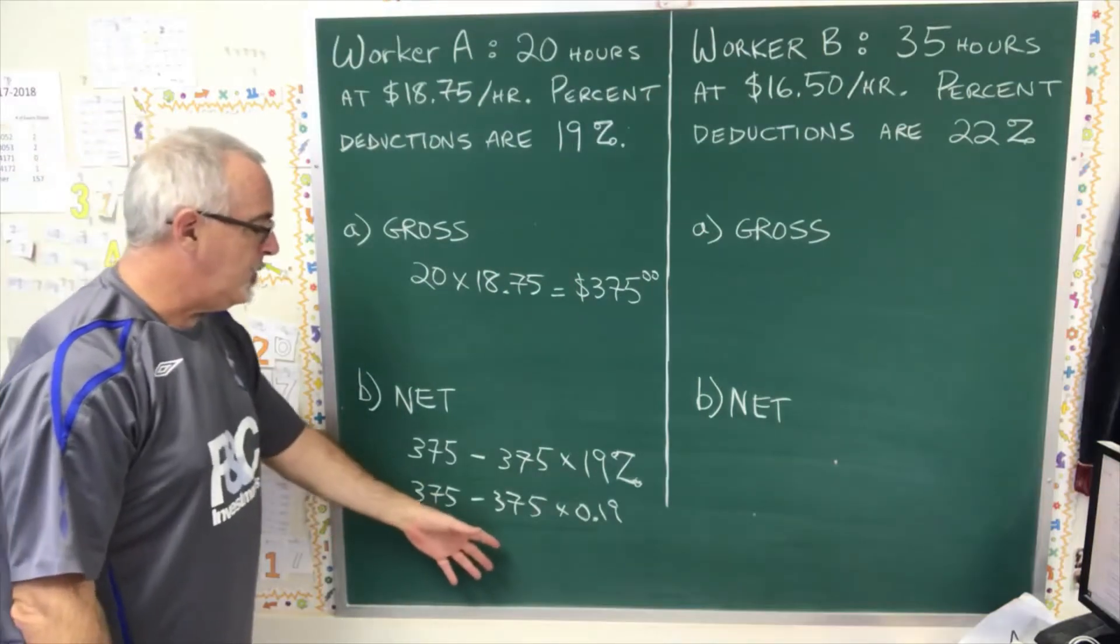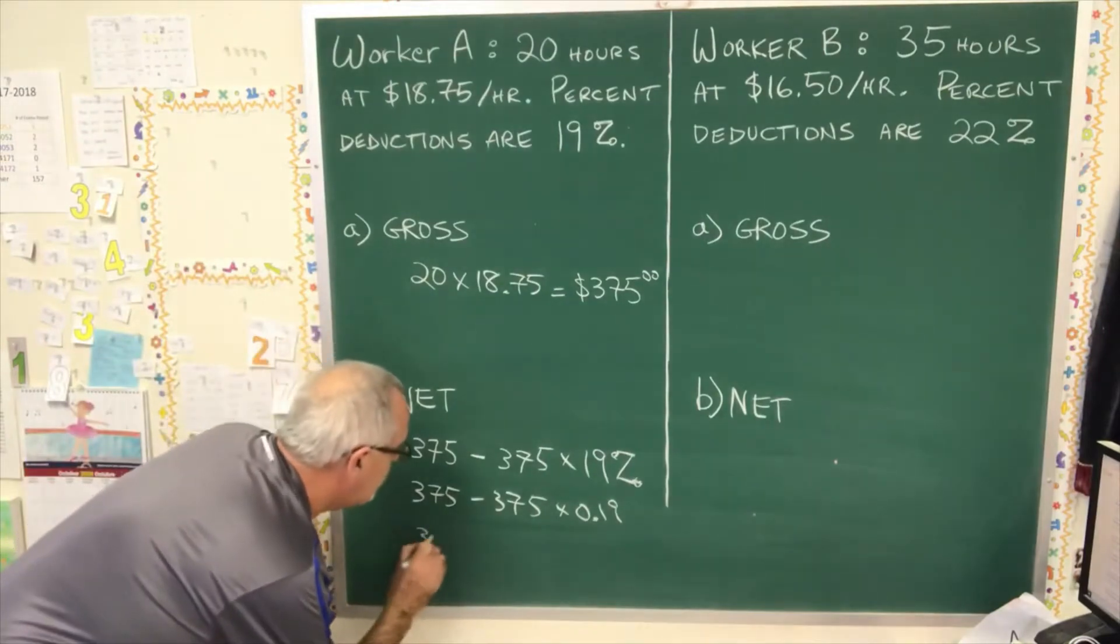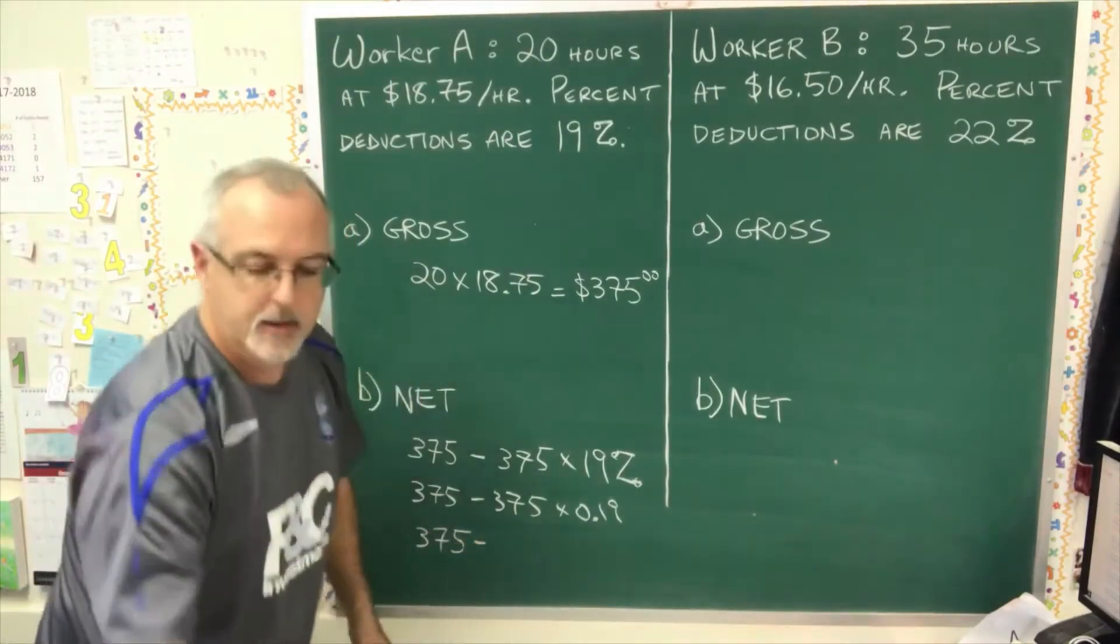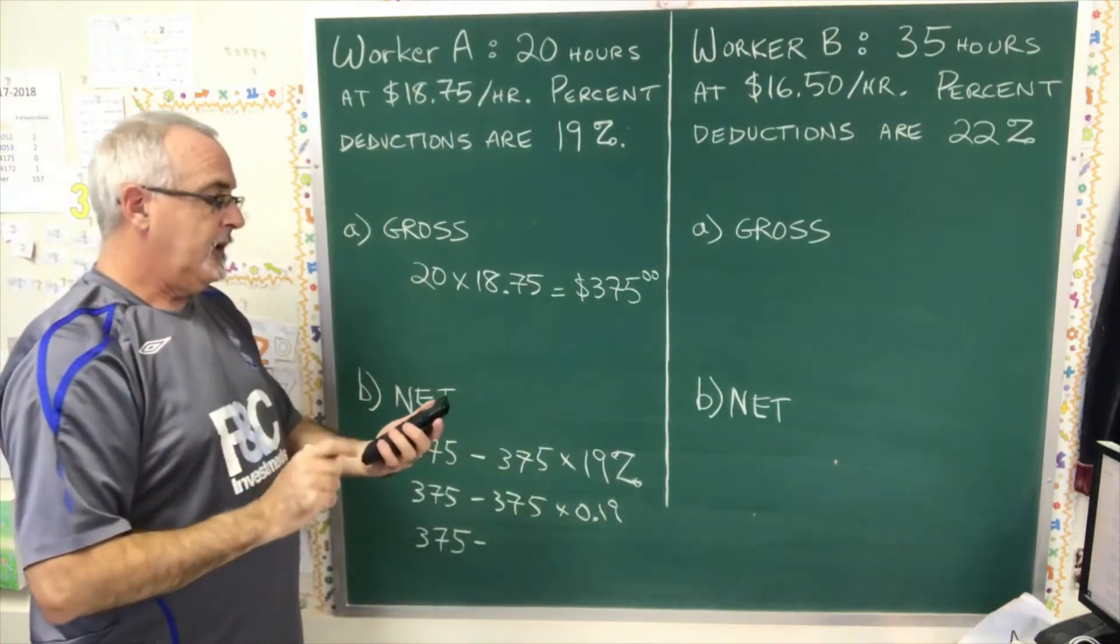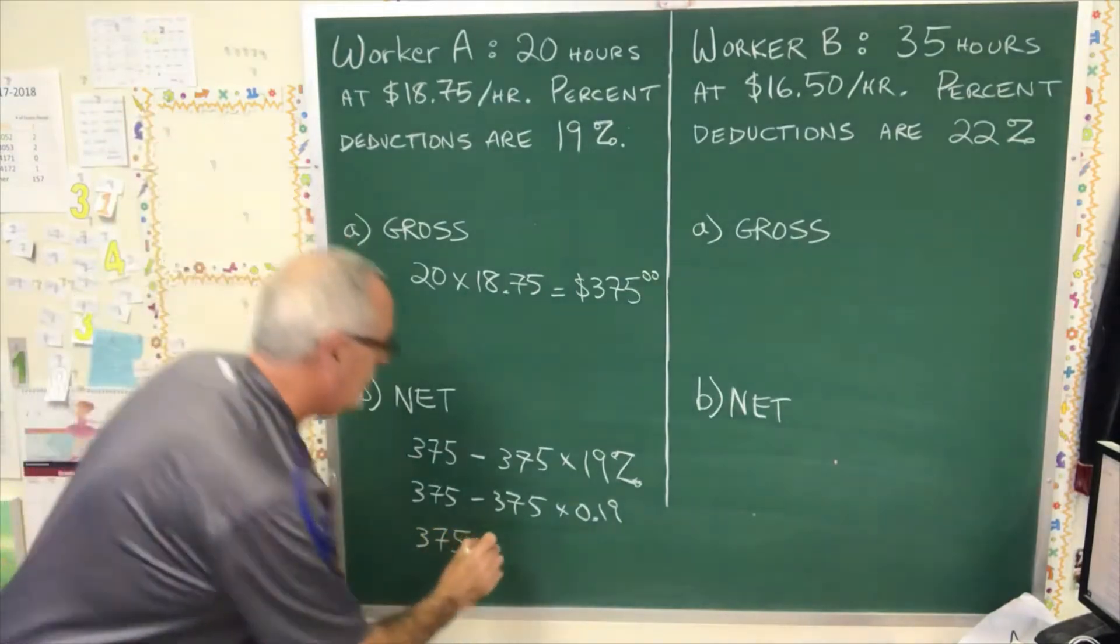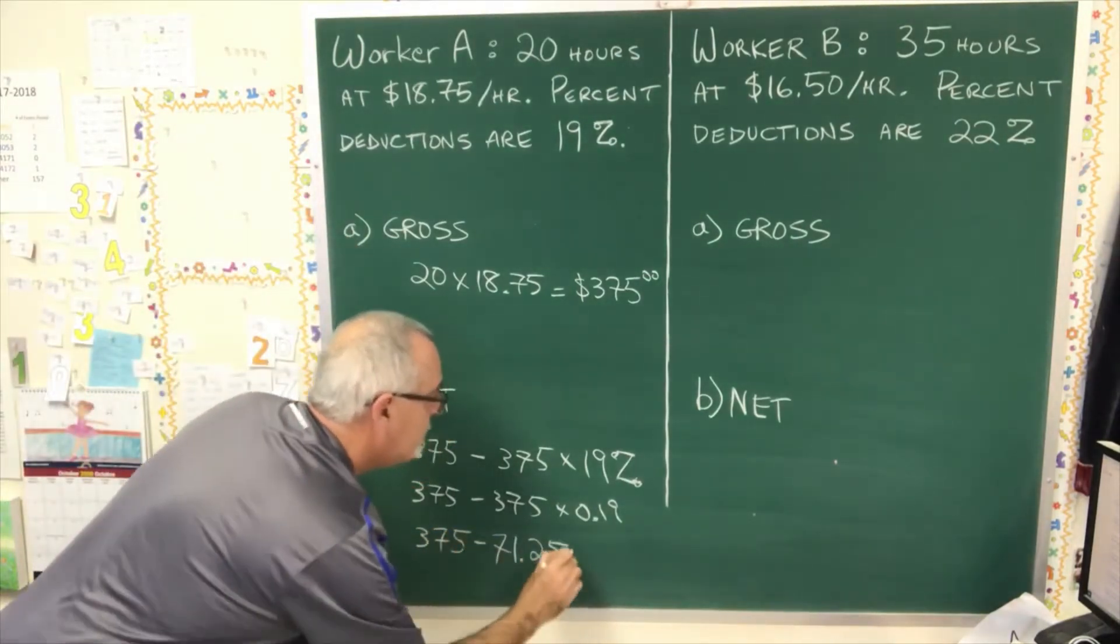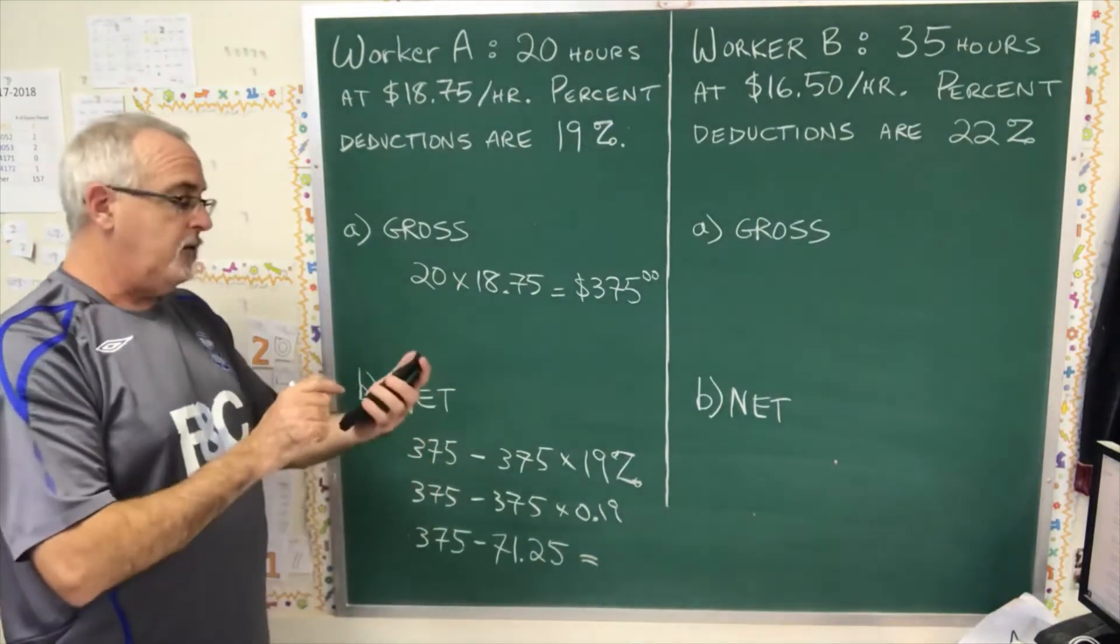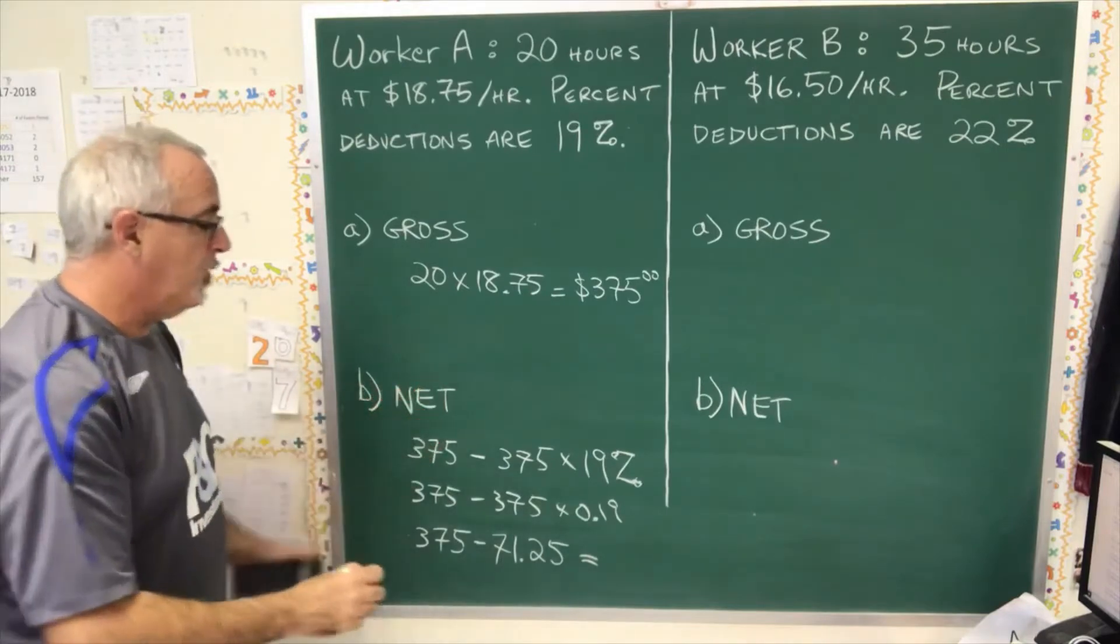The next thing to do is to do this multiplication. 375 times 0.19, and that is 71.25. Finally, I can do my subtraction. 375 minus 71.25 gives me 303.75.